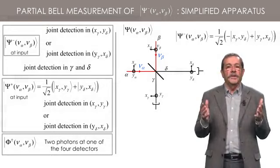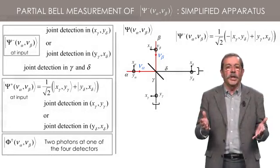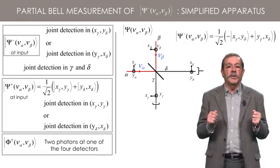A joint detection with these two detectors means that one has detected the psi-minus component in the input channel and that the input state has been projected onto the corresponding eigenspace.